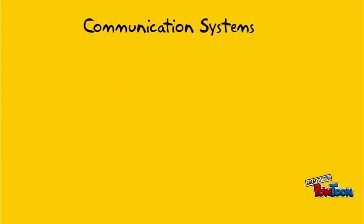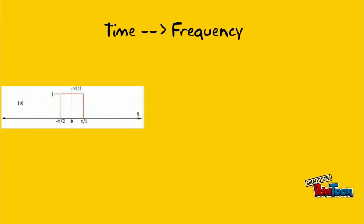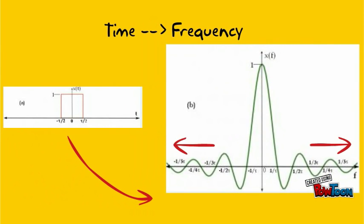In communication systems, data is transmitted as 1s and 0s which can be represented using rectangular pulses of finite duration tau. The frequency domain representation of rectangular pulse is a sinc pulse of infinite duration whose most of the energy is concentrated within minus 1 by tau to plus 1 by tau.